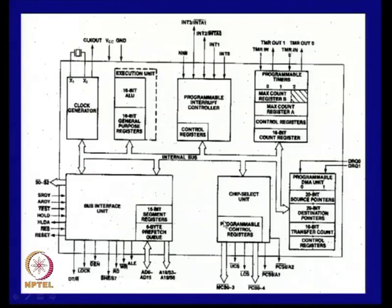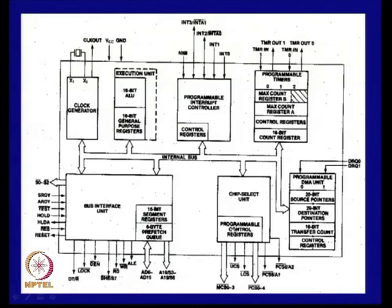This is the internal diagram. Apart from the processor execution unit, it has a clock generator, programmable interrupt controller, programmable timer/counter needed for time delays and counters in embedded applications, a two-channel DMA controller, a programmable chip select unit that provides chip select signals for memory and I/O devices, and the bus interface unit which was also present in the earlier 8086.